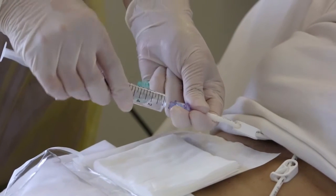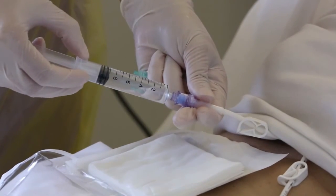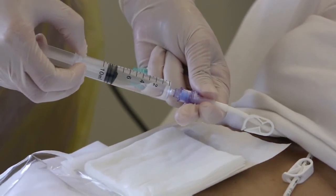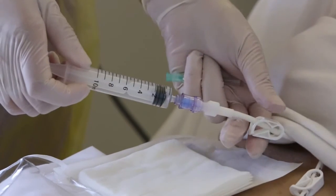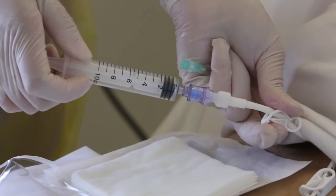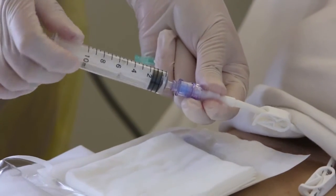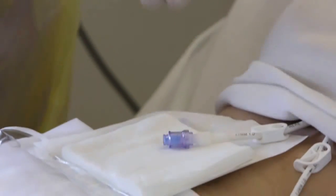Flush the line with 10 ml of saline using a push-pause method throughout the flushing process. Clamp the line whilst pushing in the last few ml of saline to create positive pressure inside the line. The second saline-filled syringe may be used if needed.